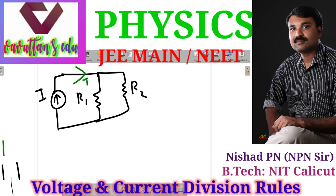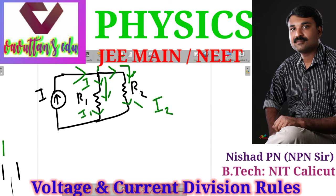The current is I. In this node, there are two paths. The current is split. The current in one branch is i2 and the current through R1 is i1.